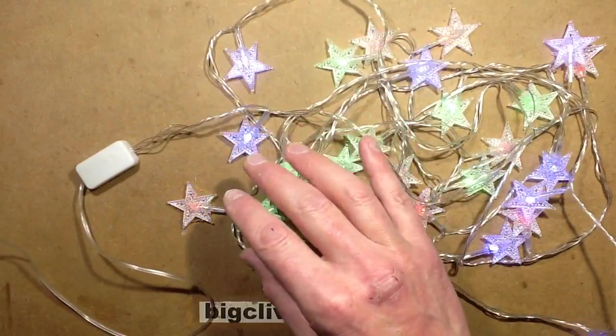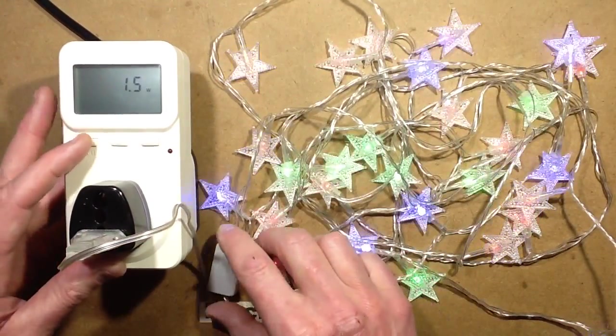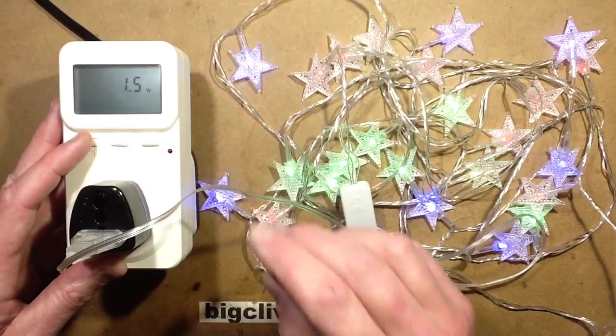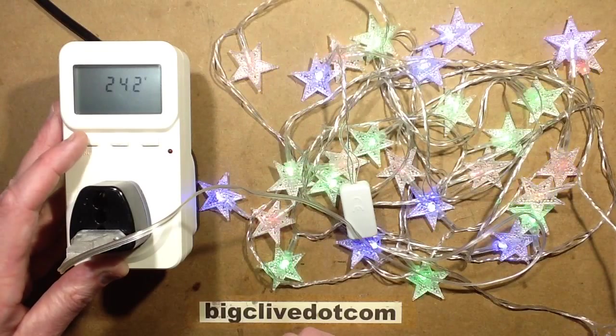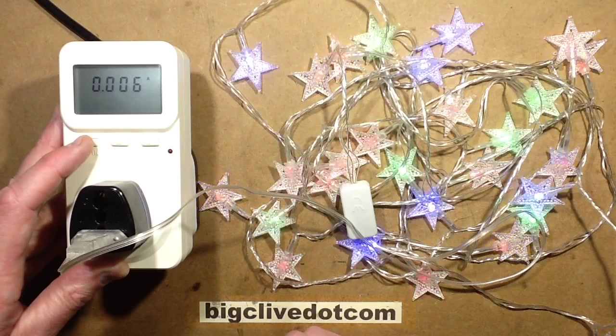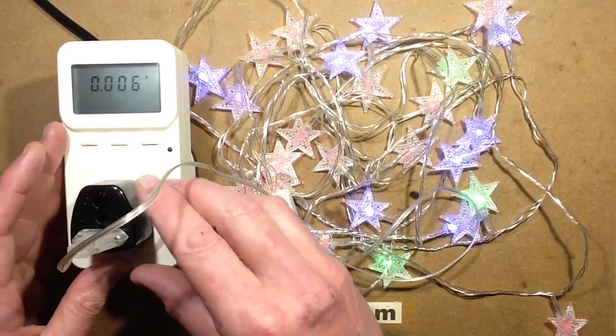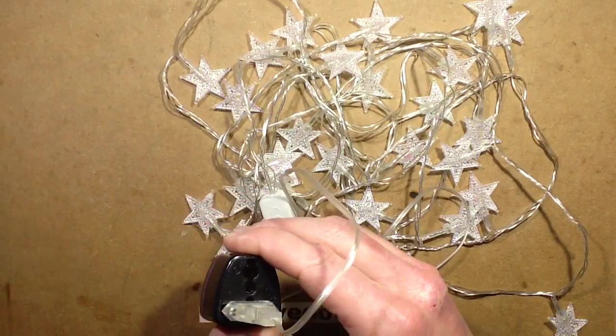These run off mains. In our case, at the moment it's running off 240 volts, and it's drawing about 1.5 watts at 242 volts. The current is about 6 milliamps, which is reasonable enough. It looks bright enough for that. So let's take a closer look at the circuitry.